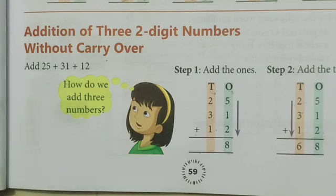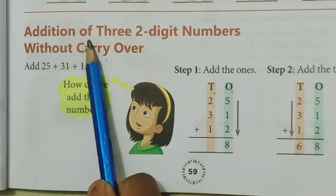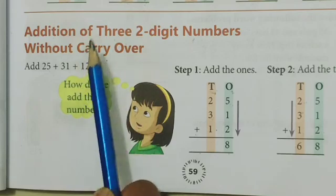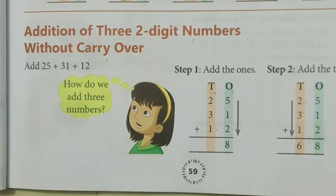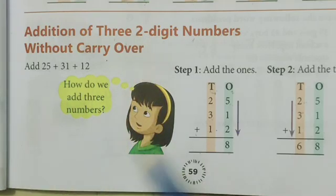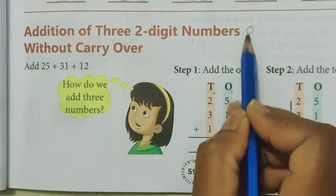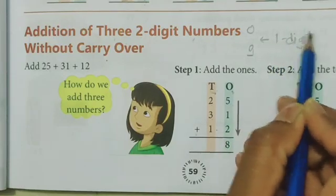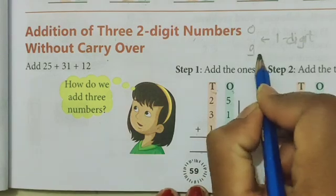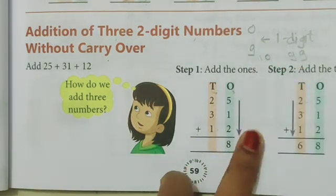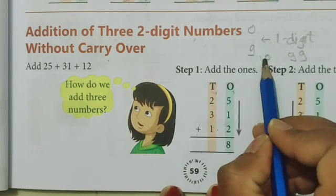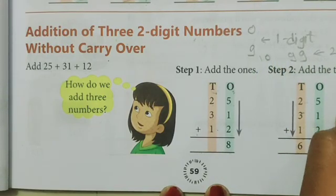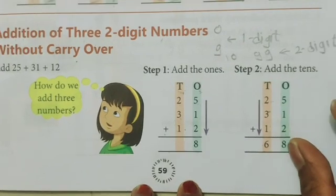Practice 1.2 is depending on the addition of three 2-digit numbers without carry over. From 0 to 9 number there is only 1 digit, therefore 0 to 9 numbers are the 1-digit numbers. Now 10 to 99 numbers, 10, 11, 12, 13, 14, 15, 16, up to 99 number, there are 2 digits. Therefore these numbers are the 2-digit numbers.